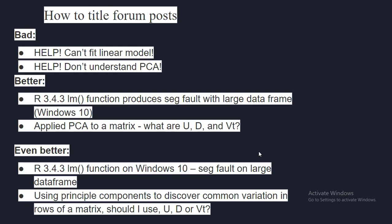Instead, provide details about what you are having problems with, what you were doing, and what the problem is. Better titles would be: 'R 3.4.3 lm function produces segfault with large data frame, Windows 10,' or 'Applied PCA to a matrix — what are U, D, and V?' Even better titles would be: 'R 3.4.3 lm function on Windows 10 segfaults on large data frame' or 'Using principal components to discover common variation in rows of a matrix — should I use U, D, or Vt?' The more specific the question, often the faster the answer.